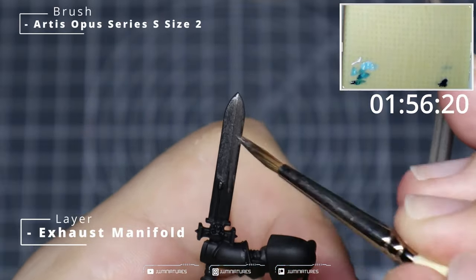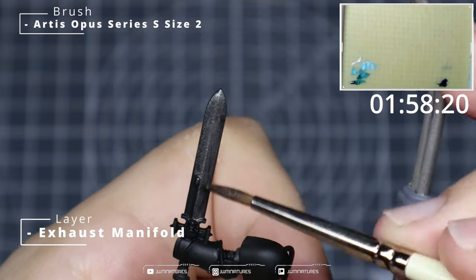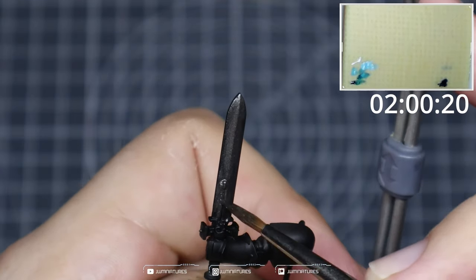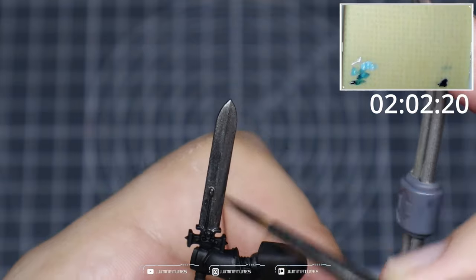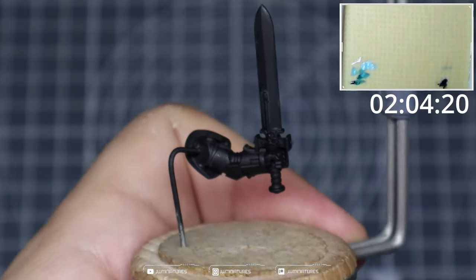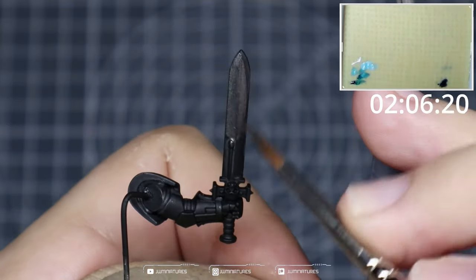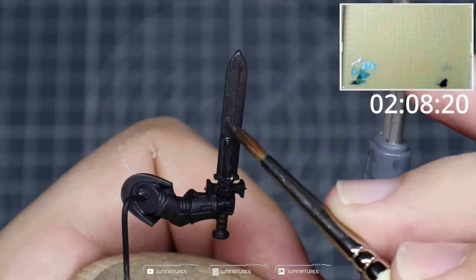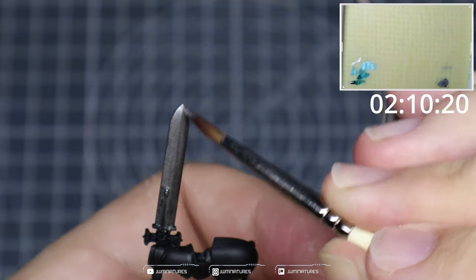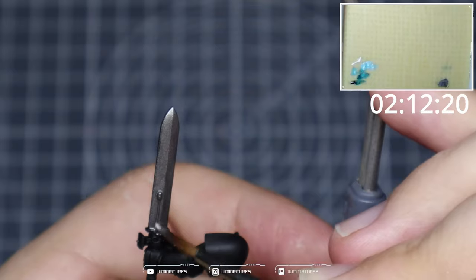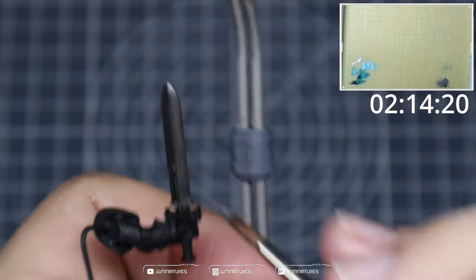Now we're going to do the full version where we start off from a base of Exhaust Manifold, just get a nice even coat over both sides of the sword here. Generally you only need one pass but sometimes you need to do it with two depending on how long you've had your metallics on the wet palette. Just quickly coat that, no bother.